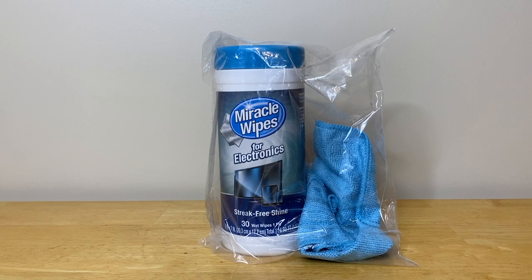It consists of the Miracle Wipe container, and inside that container are 30 wet wipes, which are one ply, as well as the rag to wipe it dry after applying the wet wipe. And as you can see, the lower portion of the container says streak-free shine, and that's what our goal is. From here, let's go ahead and open it.